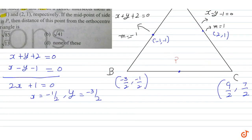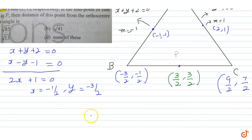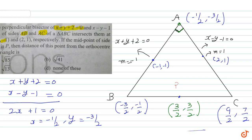P, BC का midpoint है। Midpoint of B(-3/2, -1/2) and C(9/2, 7/2): x = (9/2 + (-3/2))/2 = 6/4 = 3/2, and y = (7/2 + (-1/2))/2 = 6/4 = 3/2. So P = (3/2, 3/2). Orthocenter of a right-angle triangle is at the vertex with the 90° angle, which is A = (-1/2, -3/2).